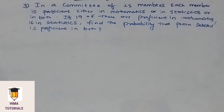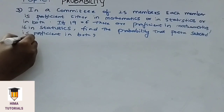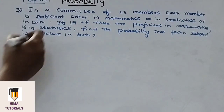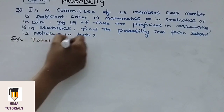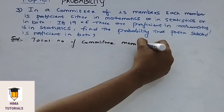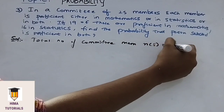Coming to the next question. In a committee of 25 members, each member is proficient either in mathematics or in statistics or in both. If 19 of these are proficient in mathematics and 16 in statistics, find the probability that a person selected is proficient in both. Coming to the solution: total number of committee members N of S is equal to 25.